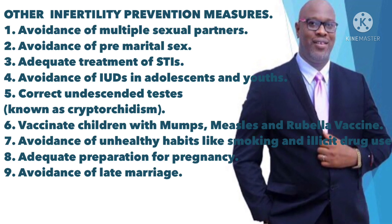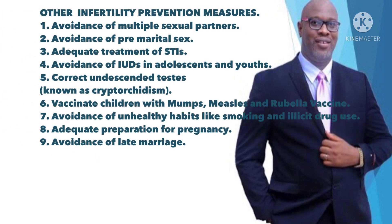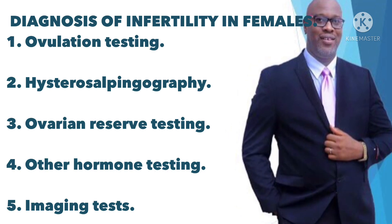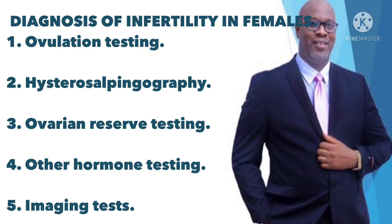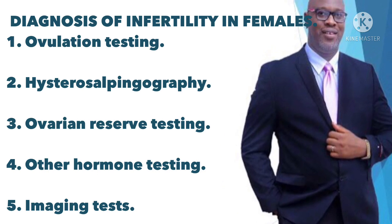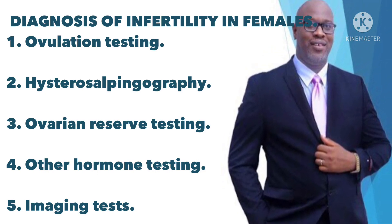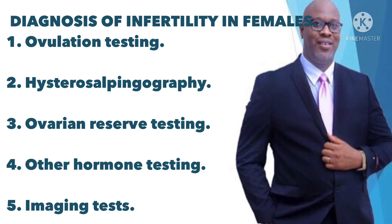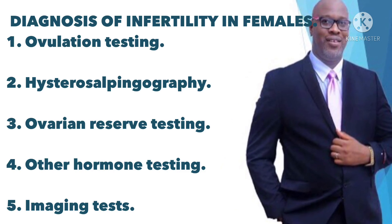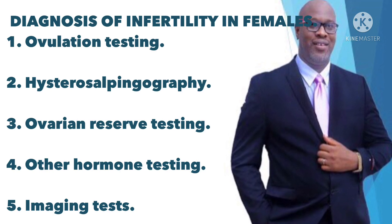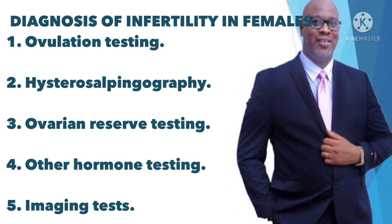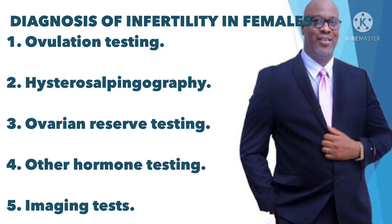9) Avoidance of late marriage, since female fertility declines sharply after 35 years of age. Diagnosis of infertility in females: accurate diagnosis is key to the effective management of infertility. Adequate evaluation of the cause or causes of infertility may need to be done before any form of treatment. Some common diagnostic techniques include: 1) ovulation testing, which can be done with an at-home over-the-counter ovulation prediction kit. This kit detects the surge in luteinizing hormone (LH) levels that occur before ovulation. A blood test for progesterone, a hormone produced after ovulation, can also indicate that a woman is ovulating. Other hormone levels, such as prolactin levels, may also be checked.